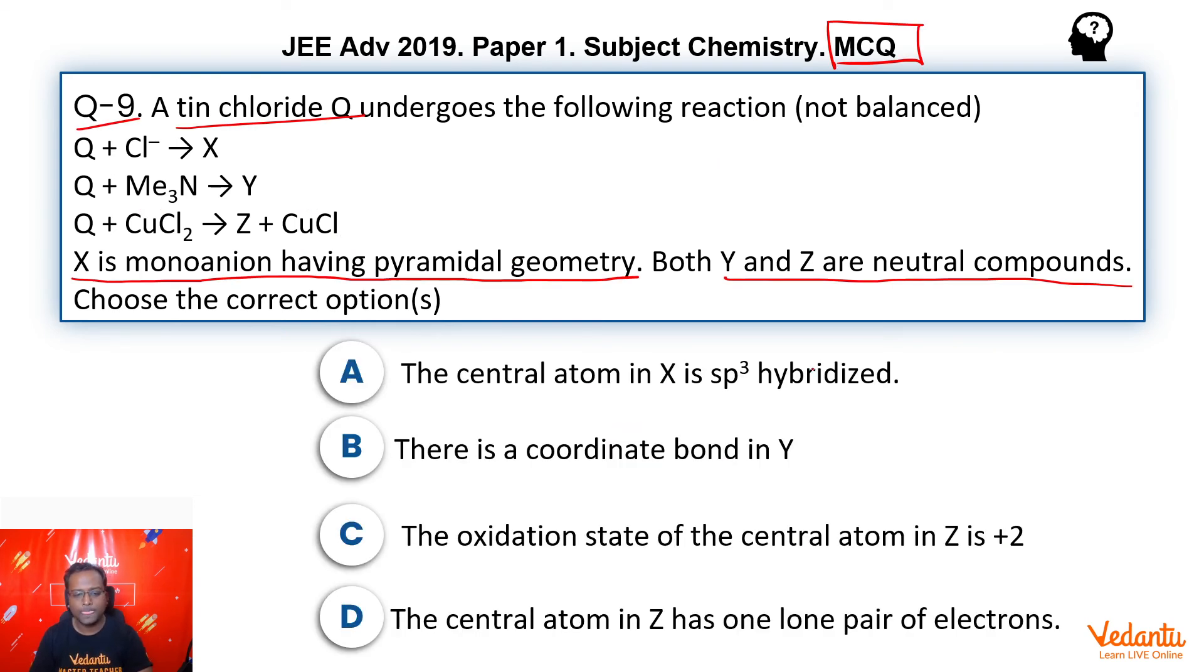Let's go back to the question. Central atom in X is sp³ hybridized - yes, absolutely correct, we saw that. There is a coordinate bond in Y - absolutely correct. The oxidation state of central atom in Z is +2 - wrong, this was +4, SnCl₄.